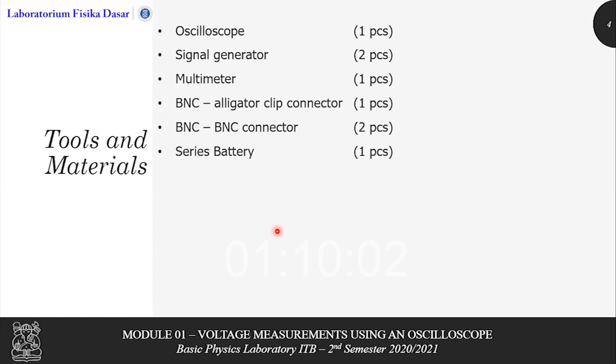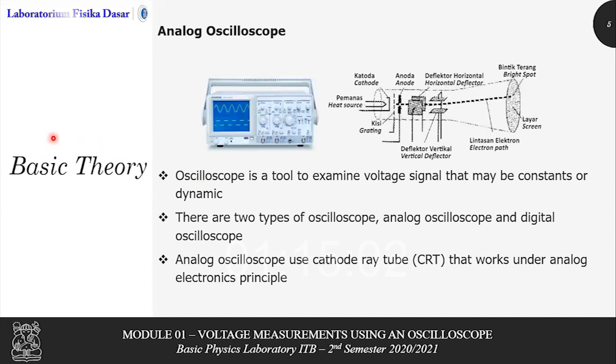These are the total materials that we use in this experiment. And then we go to basic theory. There are two theories that will be needed to understand this module which are oscilloscope and the Lissajous pattern. Let's go with oscilloscope first. Oscilloscope is a tool to examine voltage signal that may be constant or dynamic. There are two types of oscilloscope, analog oscilloscope as you can see from this picture, and digital oscilloscope.